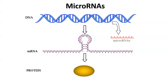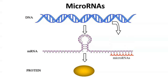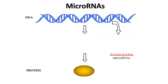MicroRNAs are also transcribed from the DNA, first as long molecules that then get processed into their final form, which is a short, single-stranded 21 to 23 nucleotide RNA molecule. The function of a microRNA is to negatively regulate gene expression by binding to the three-prime untranslated region of a messenger RNA and downregulating its expression, either through degradation of that messenger RNA or through inhibition of its translation into a protein.